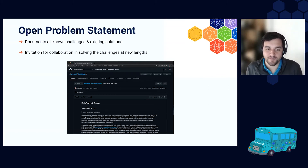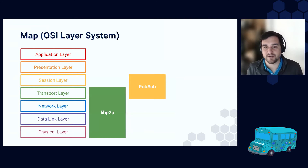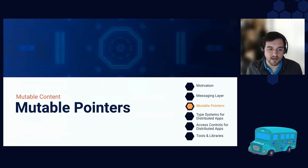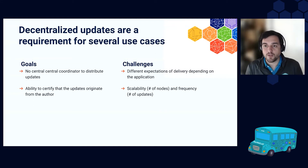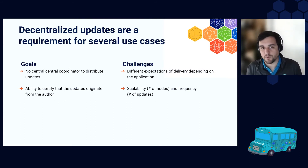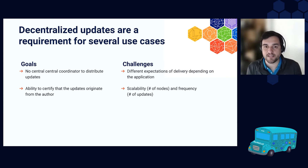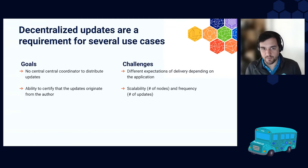With PubSub, we have a way to establish the transport and session layer where peers can coordinate around a topic and send messages to each other. Now, what about mutable pointers? Mutable pointers are a requirement for a multitude of use cases in decentralized applications. We don't want centralized infrastructure to be required to enable mutability or decentralized coordination — centralized infrastructure should only augment the service, while the protocols and applications should always work independent of network conditions. I'll use the terms 'pointers' and 'name updates' interchangeably throughout.